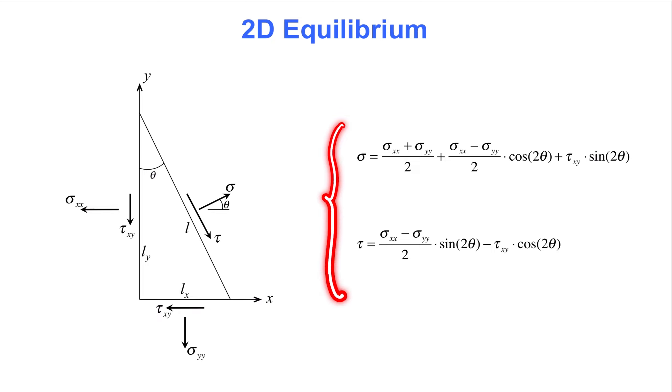They express the stress perpendicular to the inclined surface, denoted sigma, and the stress parallel to that surface, denoted tau. Notice that theta is the orientation of the inclined surface. These two equations express the axial stress and shear stress when the coordinate system is rotated by an angle theta.